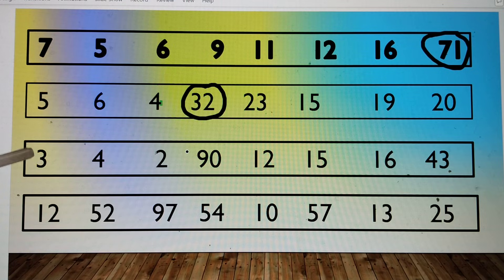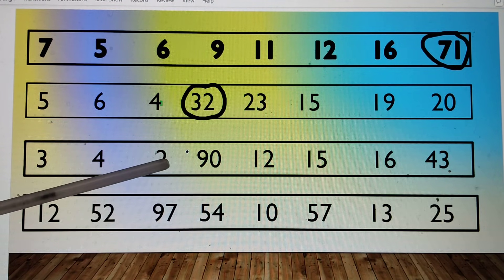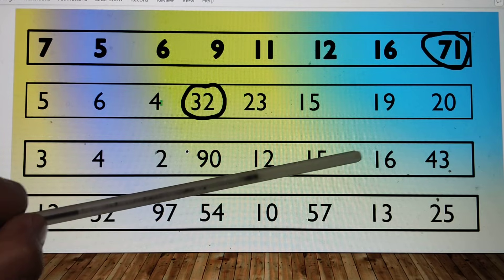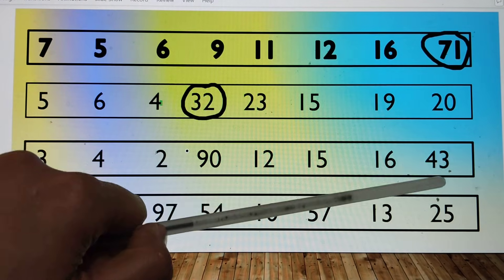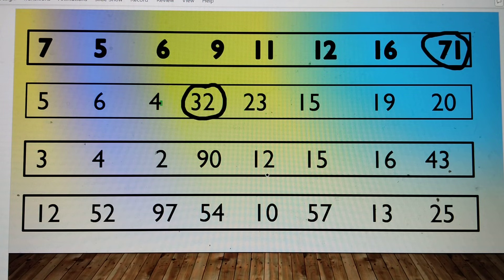In the next series, we have number 3, number 4, number 22, number 19, number 12, number 15, number 16, number 43. There are many double digit numbers, but this is the biggest number because this number begins with number 9.